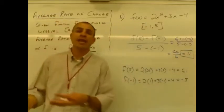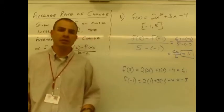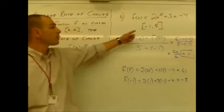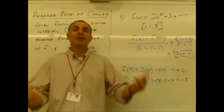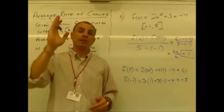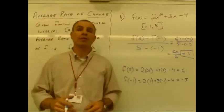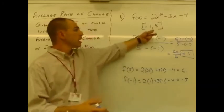So the average rate of this function is changing over the interval from negative 1 to 5 is 11 units. So it means we're going 11 units up for every 1 unit over, on average, on that interval.